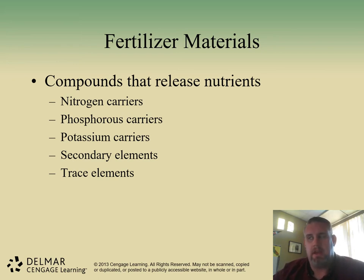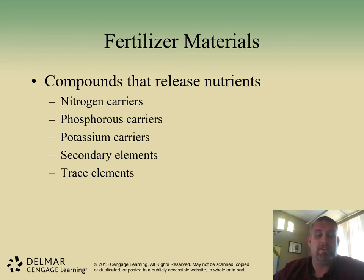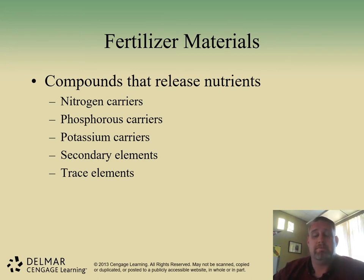Plants don't typically take pure elements up through osmosis. They typically take an ion or compound — something that they have access to. Just because a compound has nitrogen in it, for example, doesn't mean that the plant can use it. There are plenty of compounds that the plants will reject because the nitrogen is unavailable to them in those certain compounds.